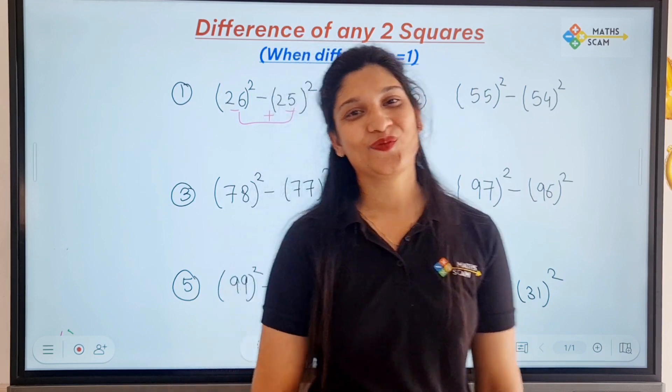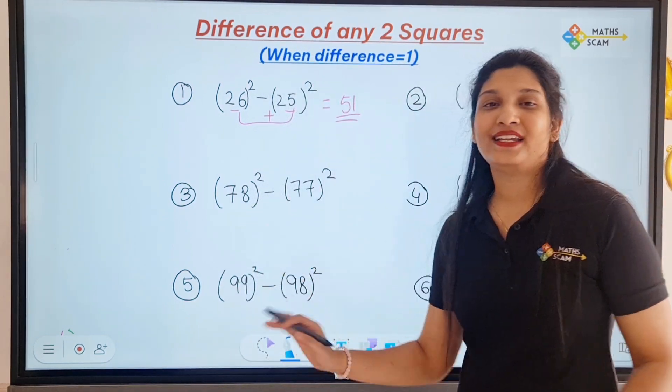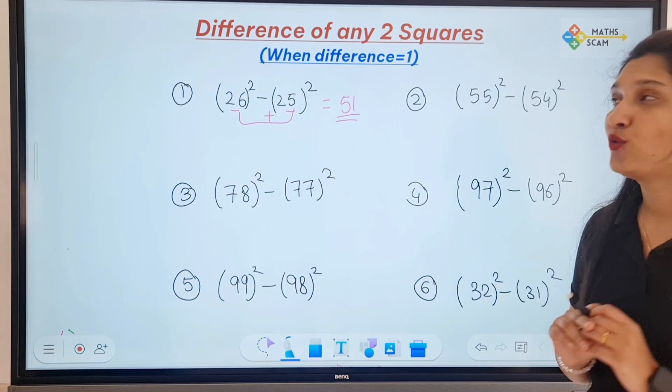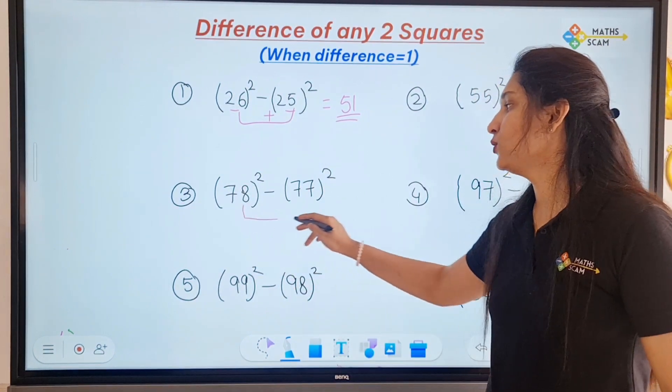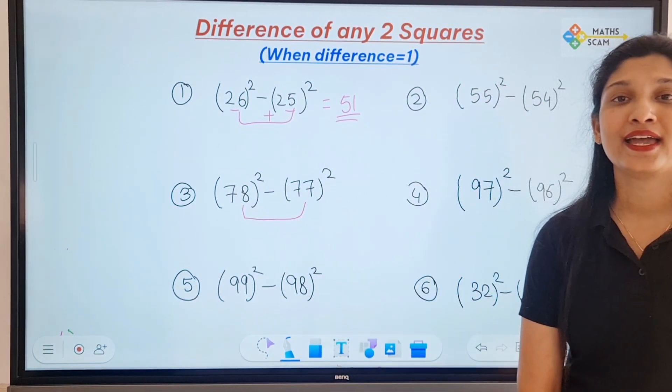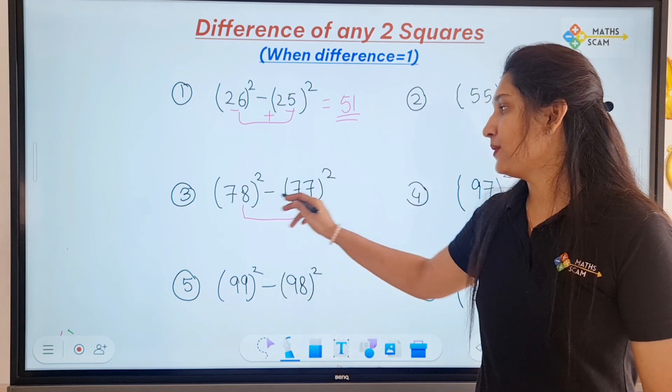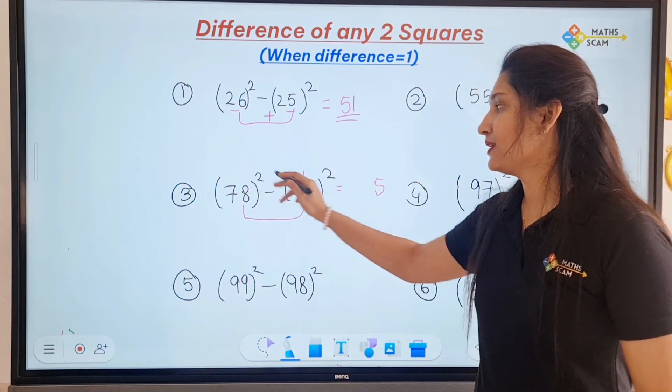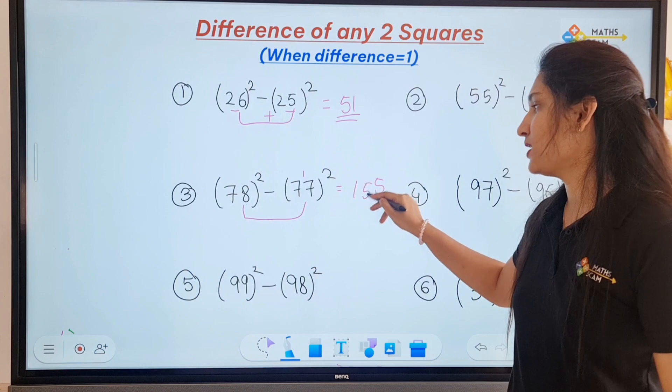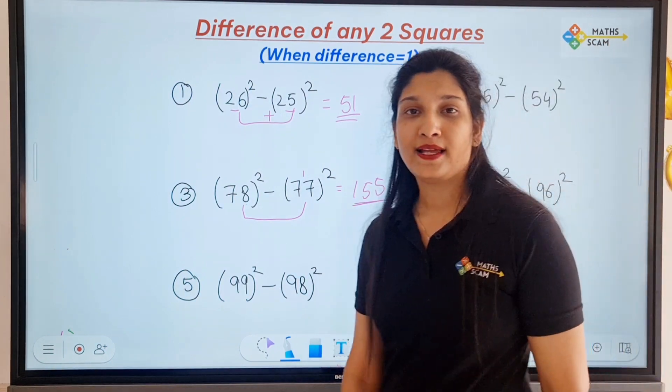Very easy guys. You don't have to calculate the square, you don't have to find the difference, you don't have to do anything. You just have to add these two numbers, that's it. Next example: 78² - 77². 8 plus 7 is 15, 5, 1 carry, 7 plus 8 is 15. Answer is 155.